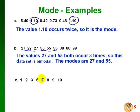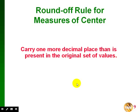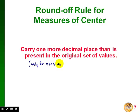For the third set, there's no value that's repeated, so this set has no mode. The round-off rule for measures of center is to carry them to one more decimal place than is present in the original set of values. We don't have to worry about this with the mode because the mode is just a count of how many times a value occurs — this rounding rule only applies to the mean and the median.